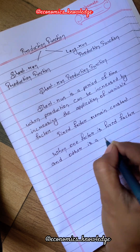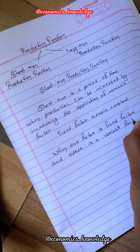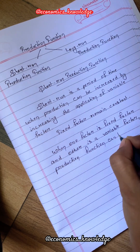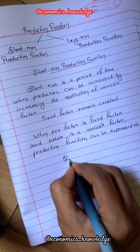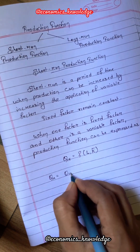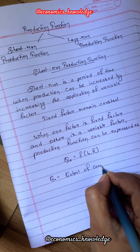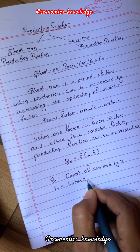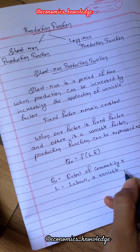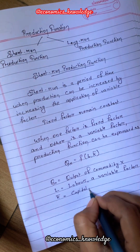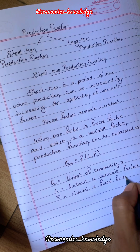When one factor is a fixed factor and the other is a variable factor, the production function can be expressed as: Qx = f(L, K̄). Here Qx means output of commodity X, L means labor — a variable factor — and K̄ means capital, a fixed factor.